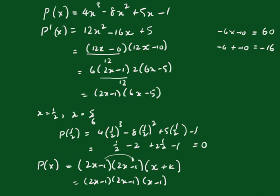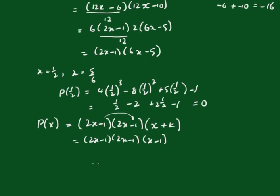So our zeros are x equals a half, a half, and 1.